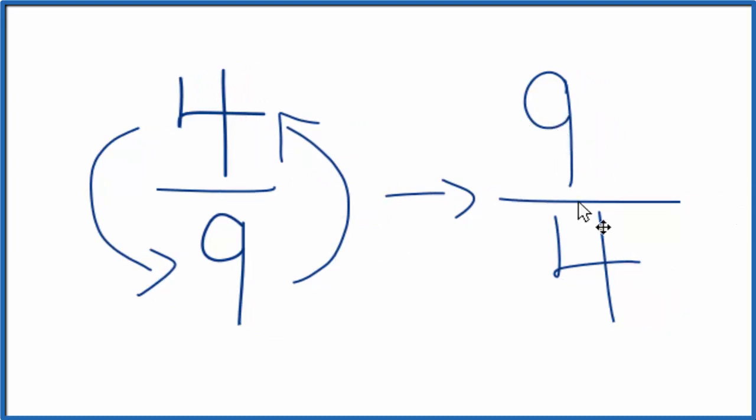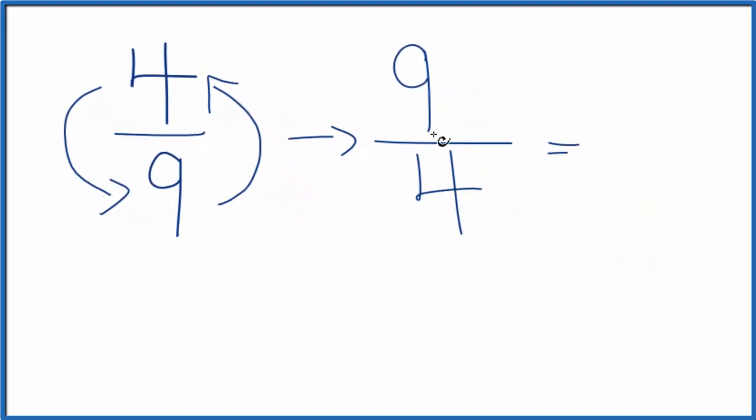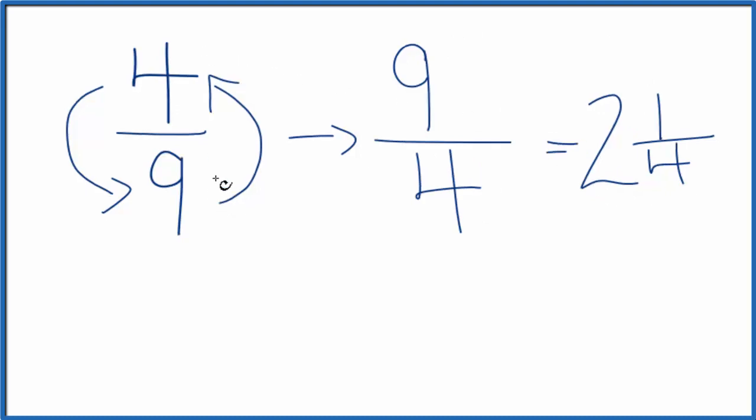We could change this from this improper fraction to a mixed fraction. 4 goes into 9 two times with 1 left over, so 2 and a fourth, that's the same thing as 9 fourths. And both of these are reciprocals for 4 ninths.